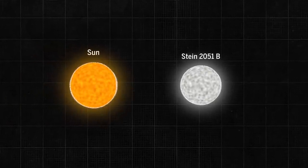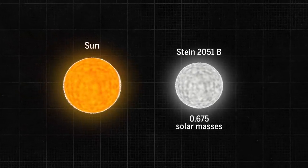The researchers' measurements put the white dwarf star's mass to be about 0.675 solar masses.